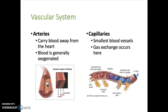When an artery vasoconstricts, the lumen narrows, which reduces blood flow. If you have vasodilation, that's the opposite — the lumen gets wider, which increases blood flow. The innermost layer is the tunica intima, which is a very thin inner lining, just a single layer of epithelial tissue.